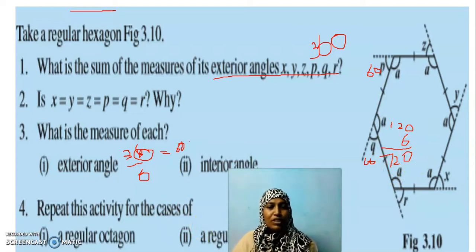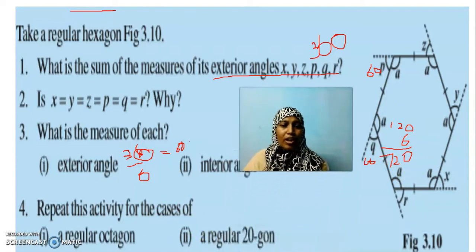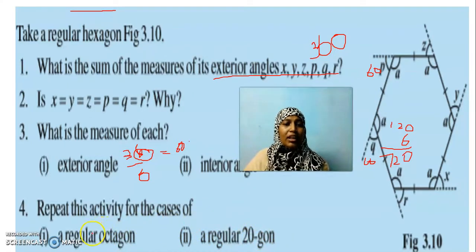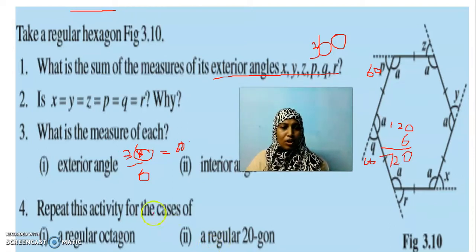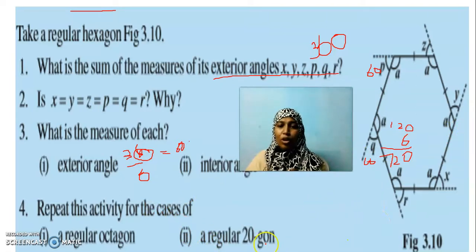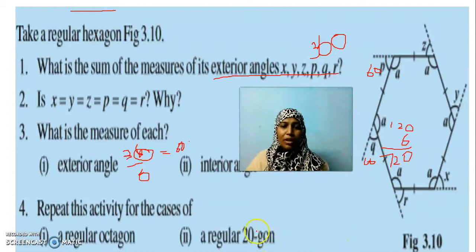Now you have to do the same for a regular octagon and a regular 20-gon. This is today's homework and you have to post this work in the group done in your classwork mode with a diagram if possible. For the regular 20-gon, you will not be able to draw it, so it is enough to do the calculation part alone.